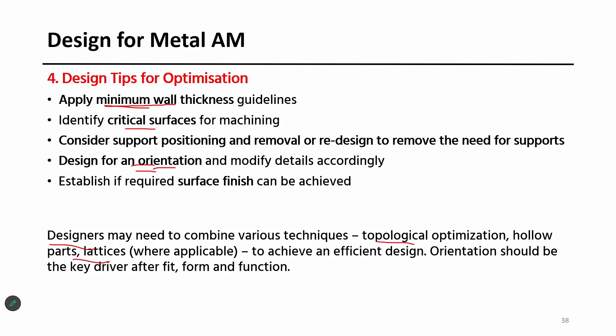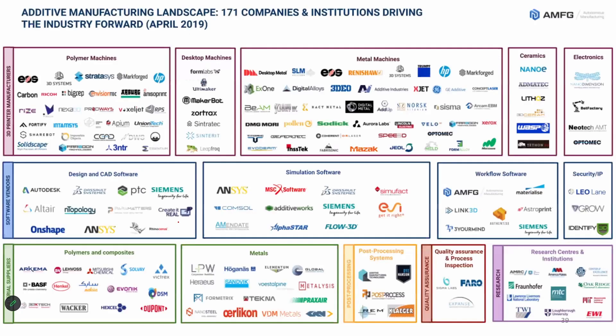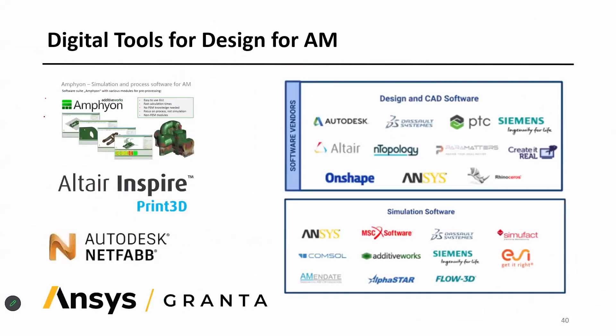Design tips for optimization: identify critical surfaces for machining — like circular holes, you can avoid poor geometry there. Consider what is the minimum wall thickness and how you can achieve it by 3D printing, or what alternative way exists. Think about support positioning and removal — even if you have support material in the 3D print, can you really remove it after printing, or do you need to redesign the CAD again?